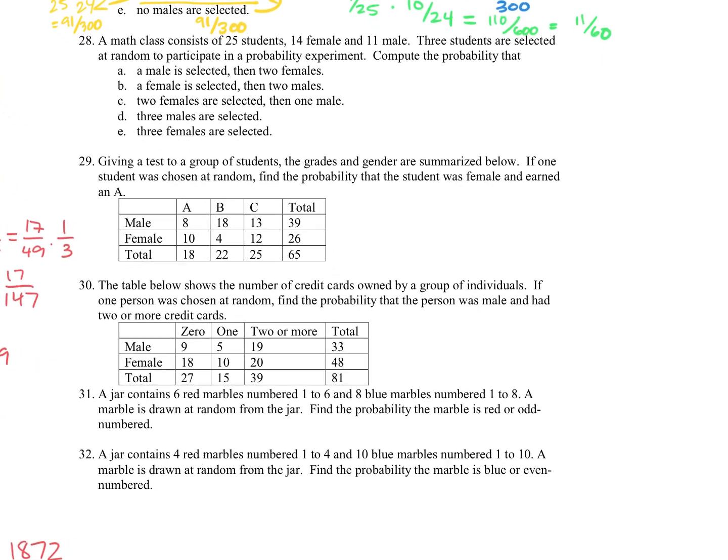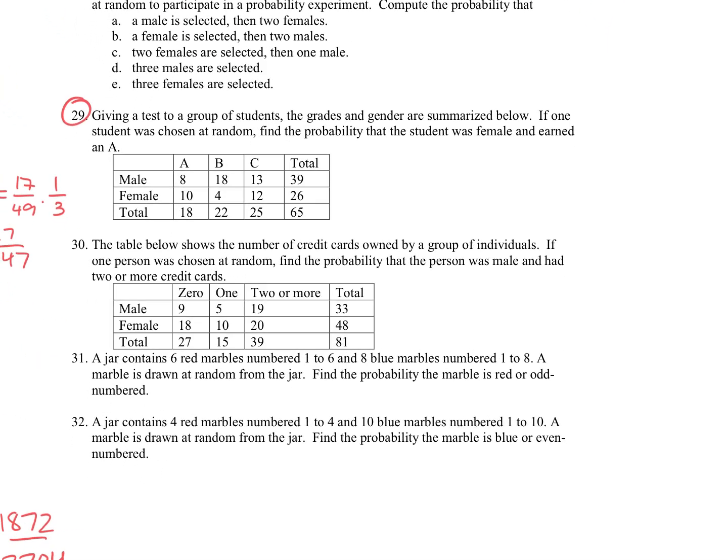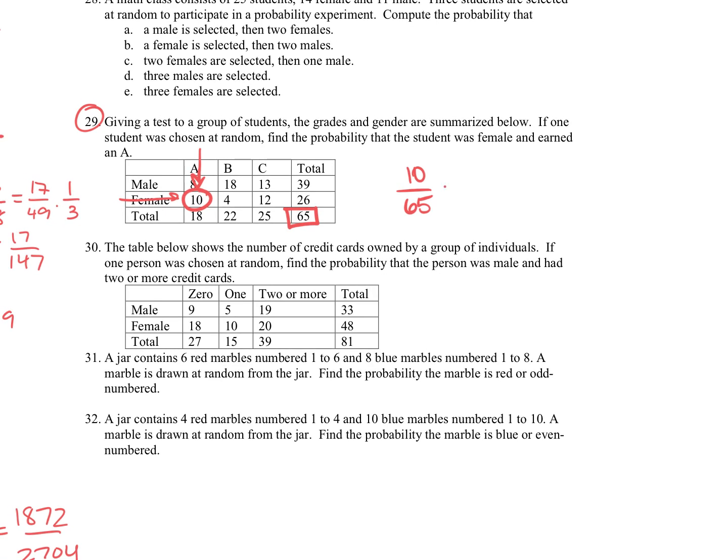For question 29, we are giving a test to a group of students. The grades and gender are summarized below. One student was chosen at random. Find the probability the student was female and earned an A. So the female earning an A would be 10, and that's out of our total of 65. So 10 out of 65. And we can reduce that. If we divide by 5, that would be 2 out of 13.